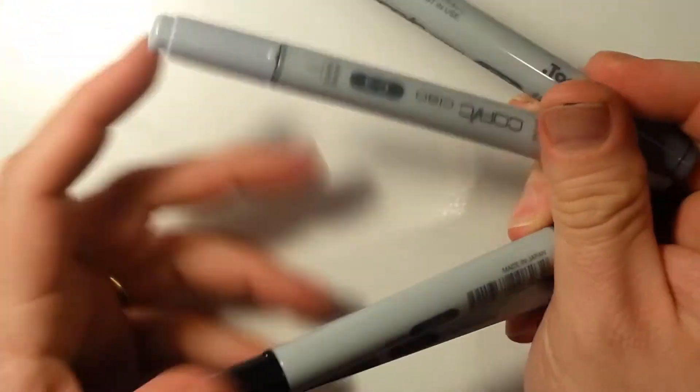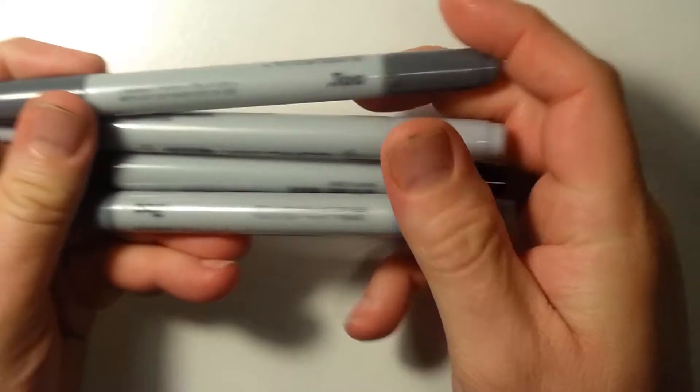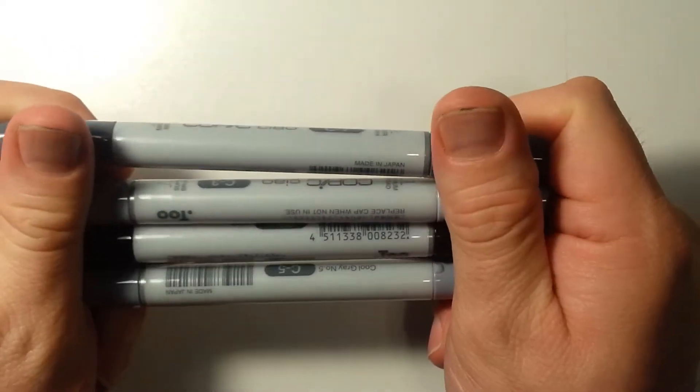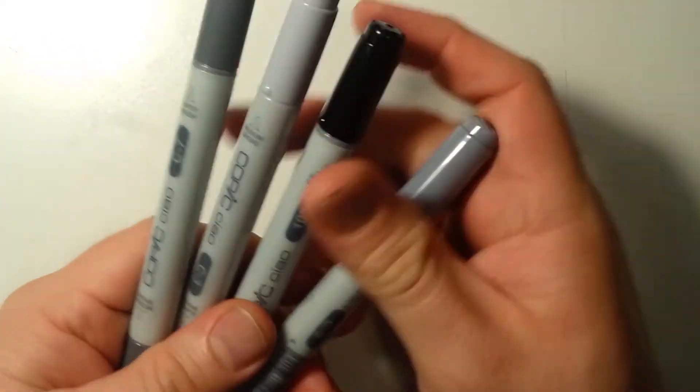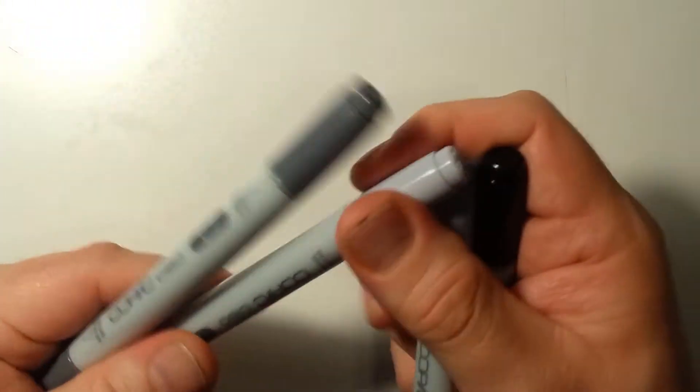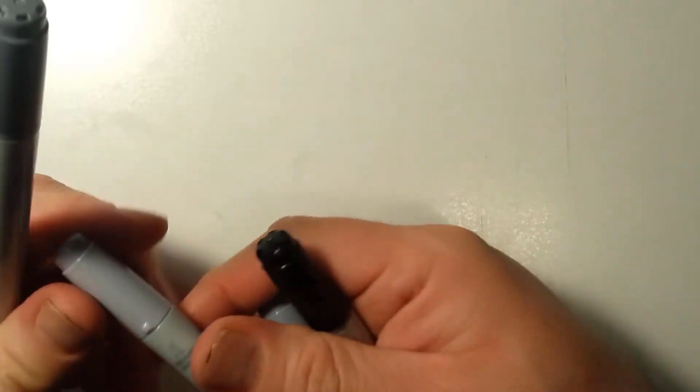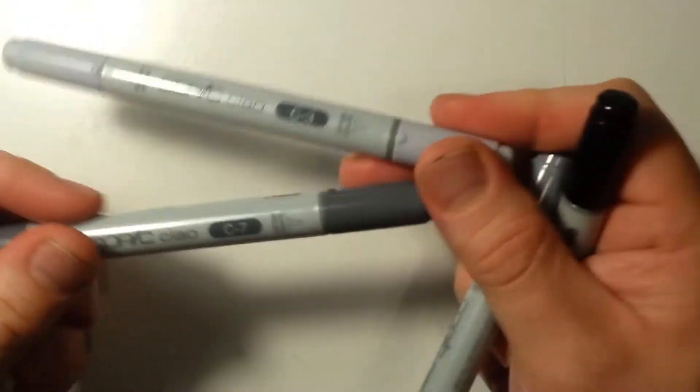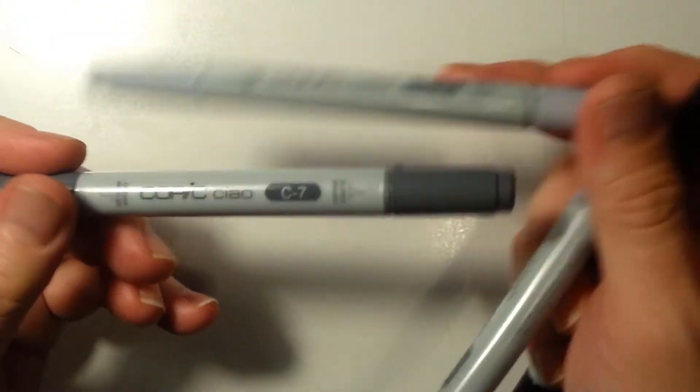Then I went to my local Michaels and they were having a huge sale on Copic markers, so I picked up some Copics that I needed. They were buy one get one 50% off. Just basically the basic grays. The only thing they didn't have was the C1 I needed. They had all the others so I picked them all up and a black pen too.